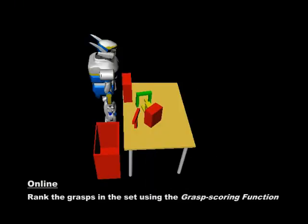Online, we rank the grasps in our set using the Grasp Scoring function. The Grasp Scoring function takes into account the local environment, the position of the robot, and the force closure quality of the grasp.